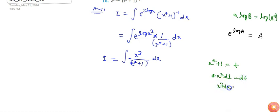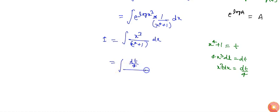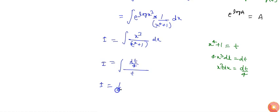Let x⁴+1 equal t, so 4x³ dx equals dt, or x³ dx equals dt/4. Substituting both x⁴+1 and x³ dx, I get dt/4 in the numerator and t in the denominator, transforming the integral into (1/4)∫dt/t.